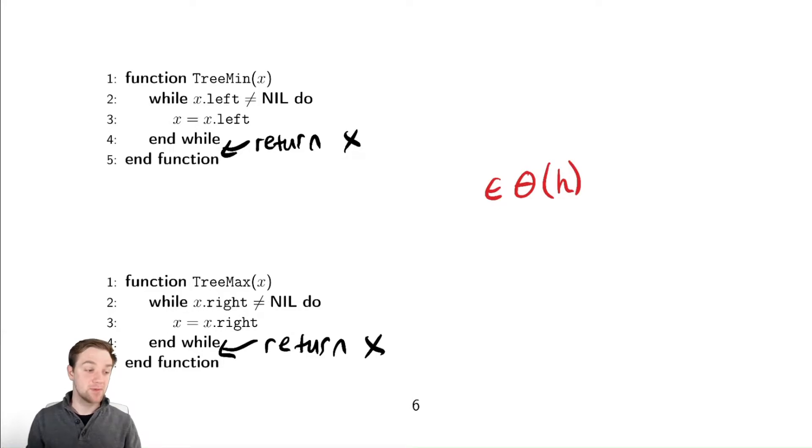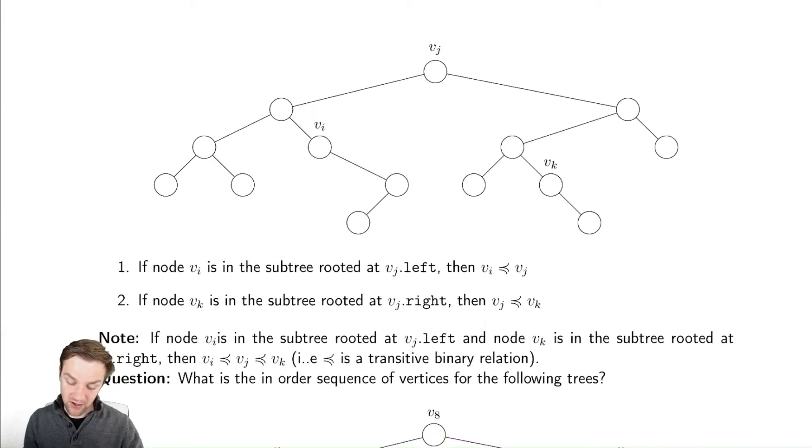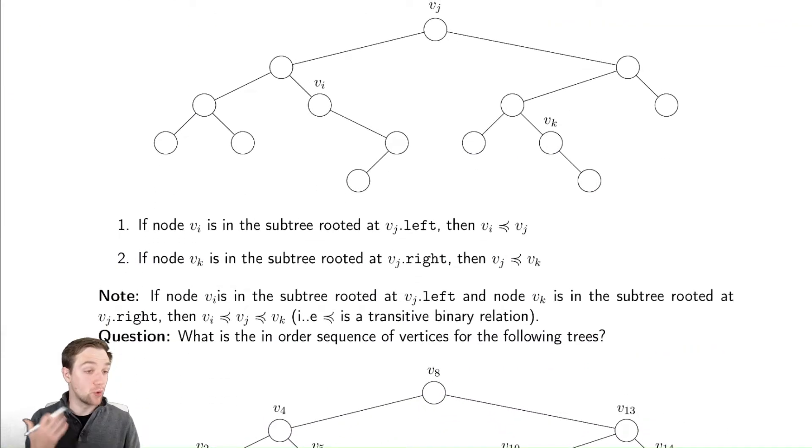Having discussed the minimum maximum, let's discuss how we can order the rest of the elements. We have a sort of strange thing here, where we talk about the in-order sequence, or in-order representation of these things. If I have a binary search tree displayed like the one up there, then we can say some things about these nodes vi, vj, and vk.